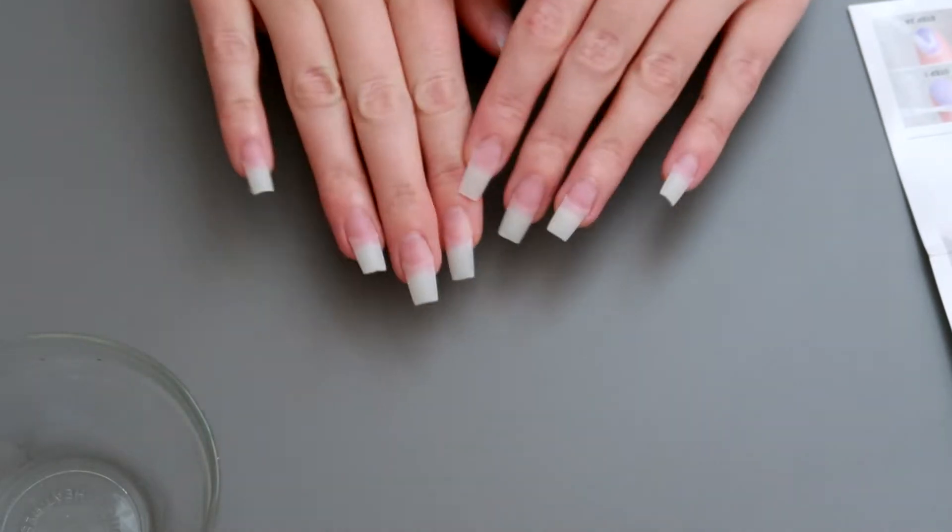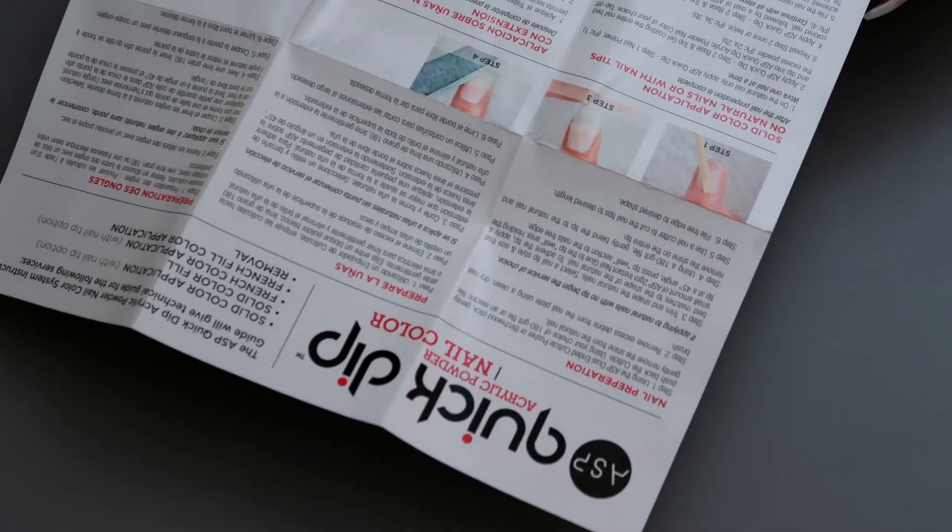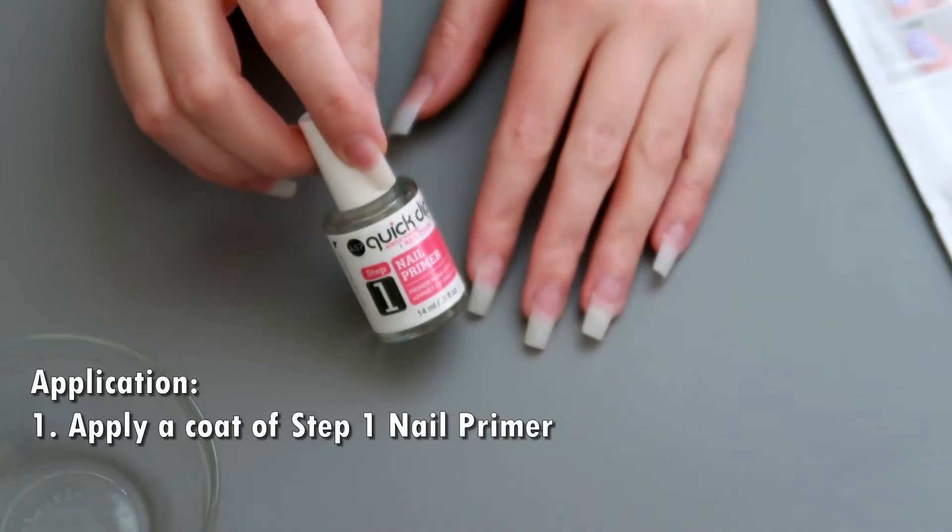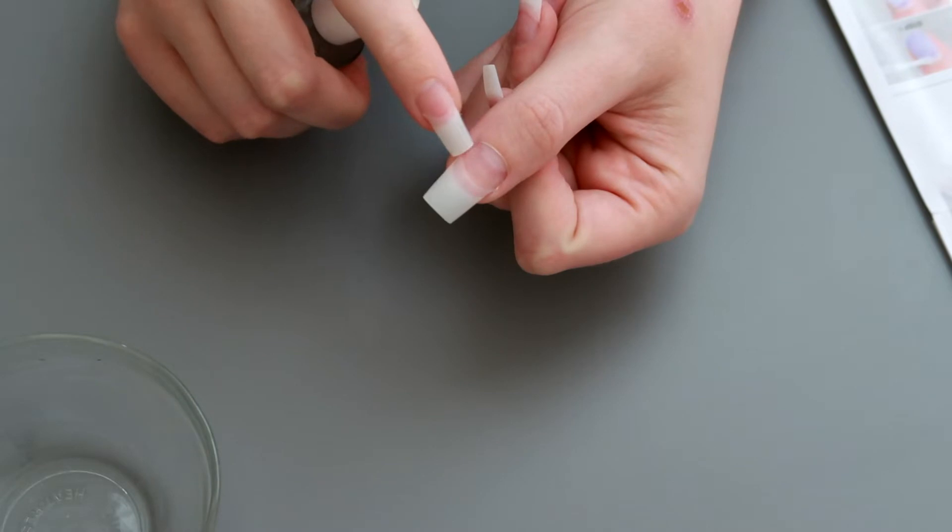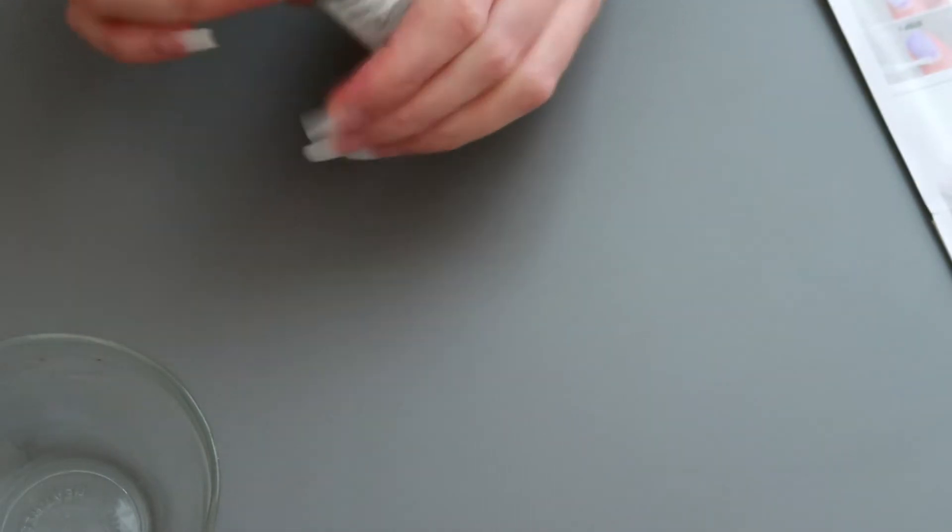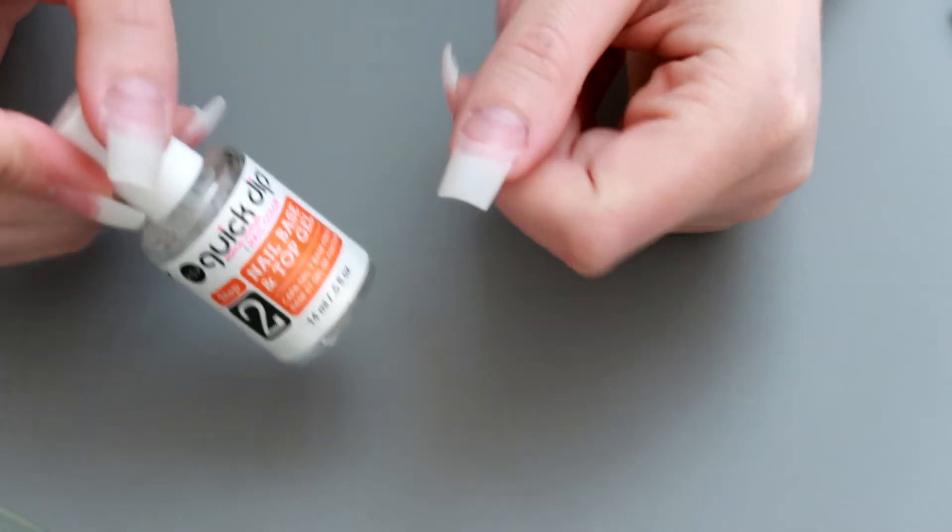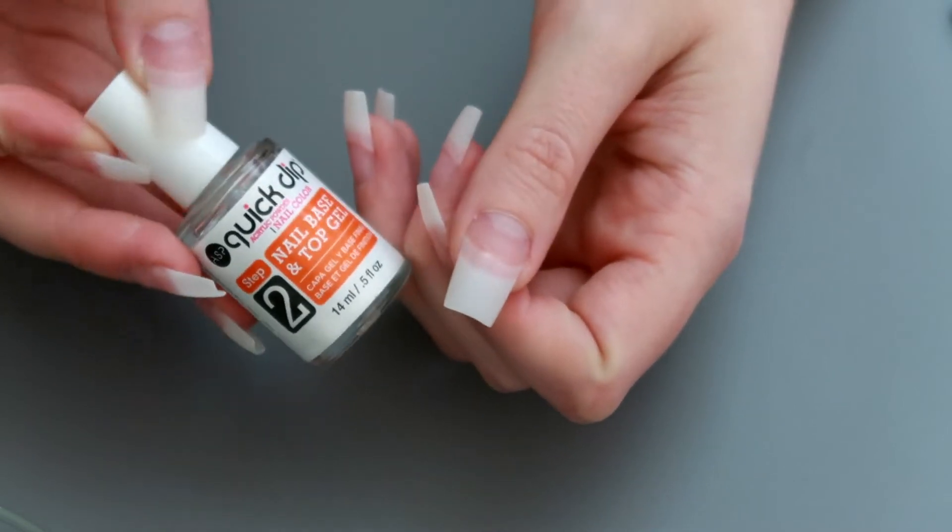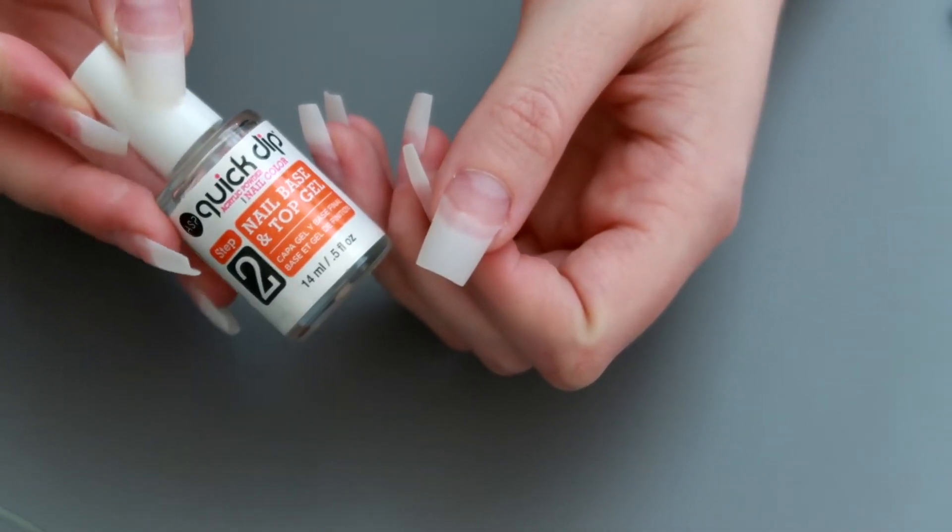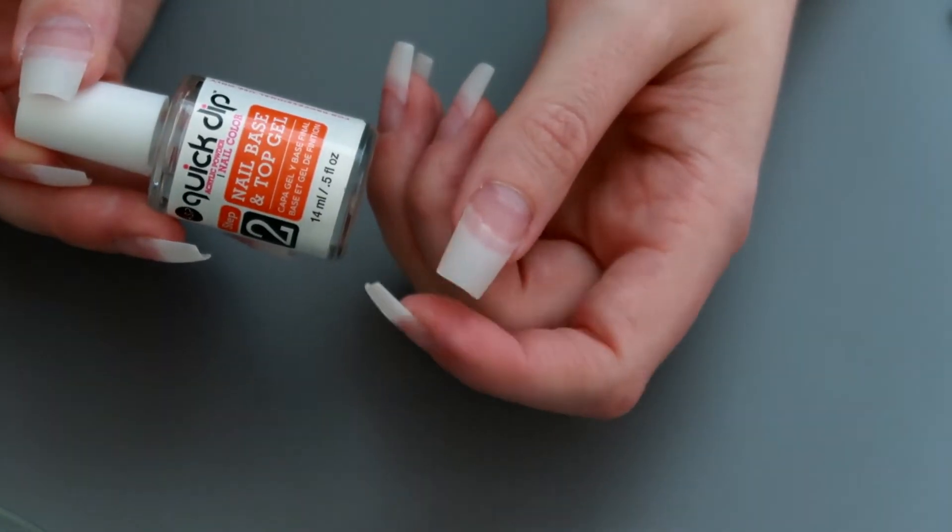Once you've washed off your hands again of all the powder, next step is to start applying the acrylic. The instructions say to work one nail at a time so that's what I'm going to do. First step is to apply the step one nail primer to only your natural nail. So if you have tips, only apply it right here. Now step two, the nail base and top gel. The thing that I didn't do in my first video was make sure that I built up the apex where the tip and my natural nail meet. So this time I'm going to attempt to do that and my first layer is just going to be a little bit at that breaking point.